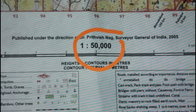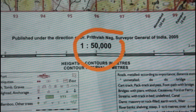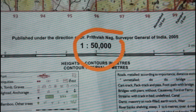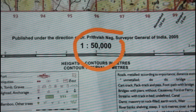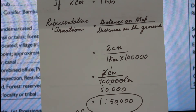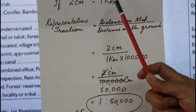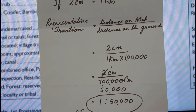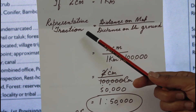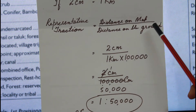The third scale is RF — representative fraction — which is generally seen above the linear scale. The representative fraction is represented as the ratio of the length of a line on the map to the corresponding actual distance on the earth's surface. The formula of representative fraction is: distance on the map divided by distance on the ground, at the same unit. If the numerator is in centimetres, the denominator should also be in centimetres.